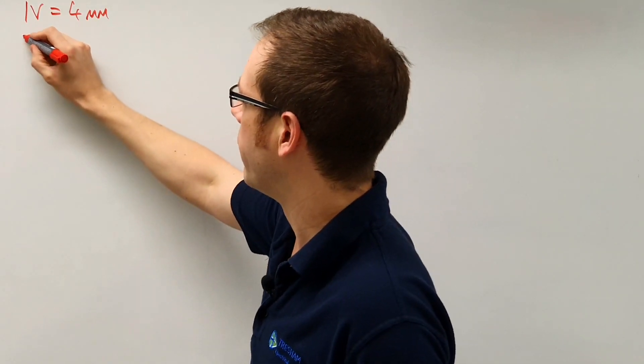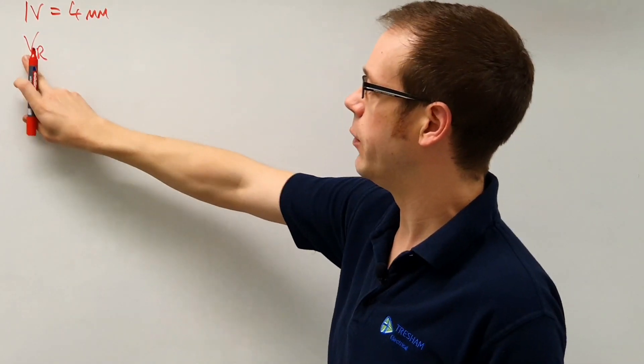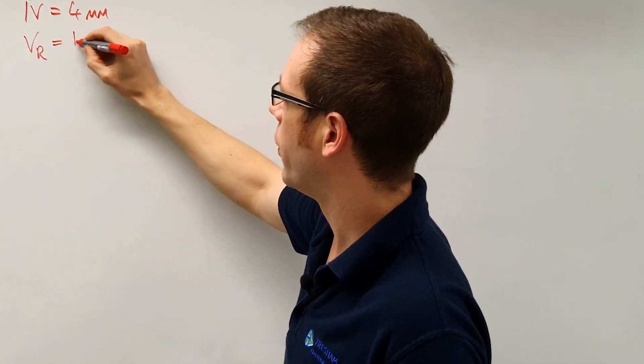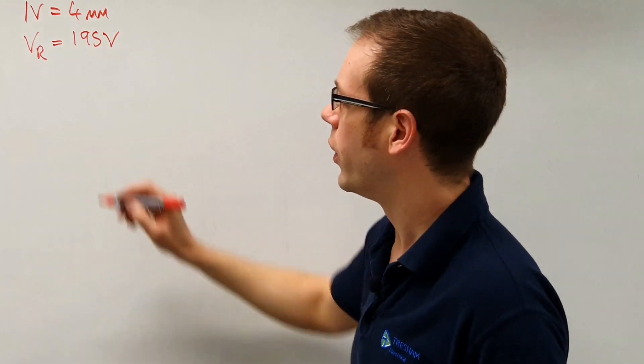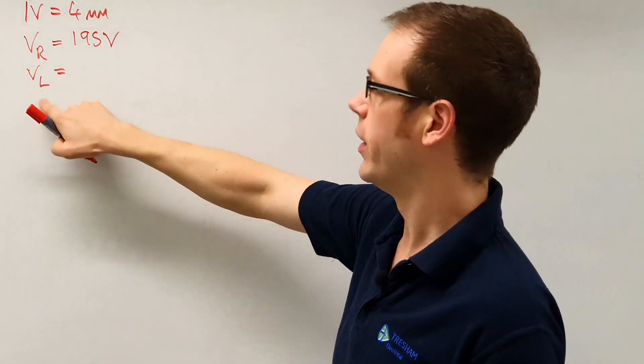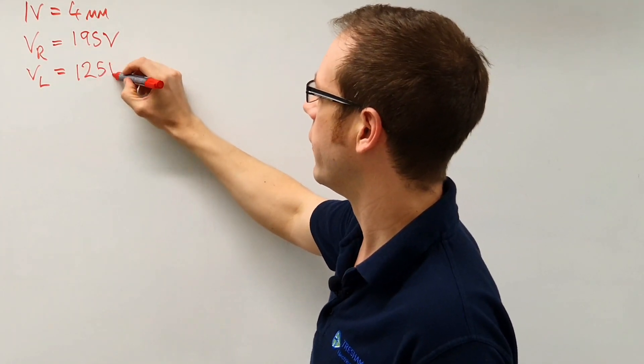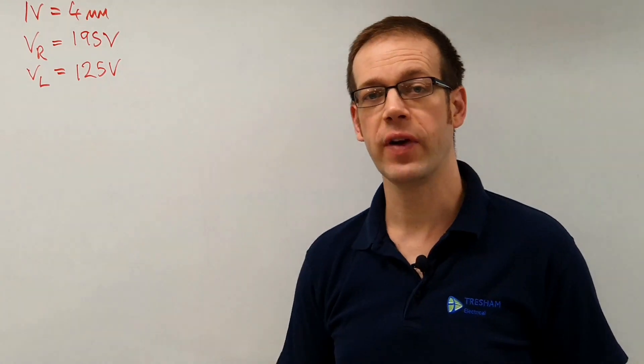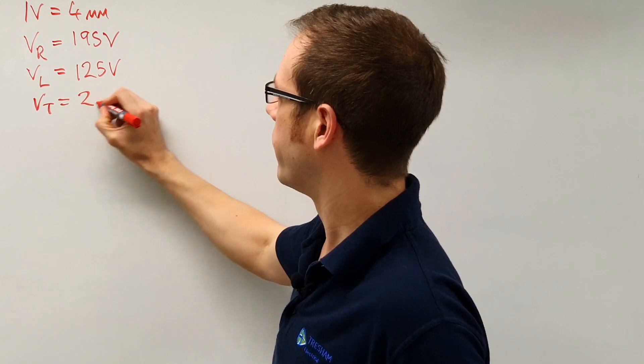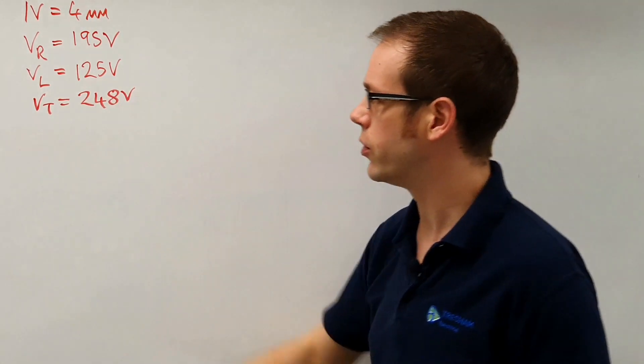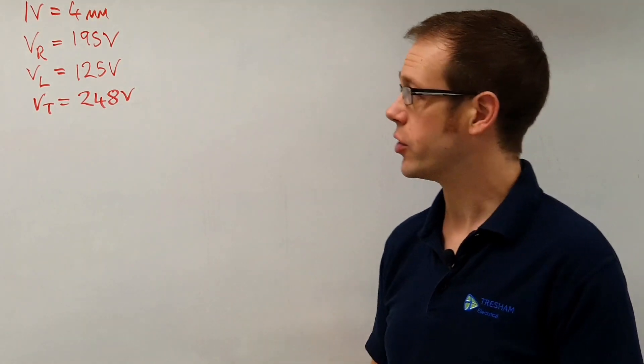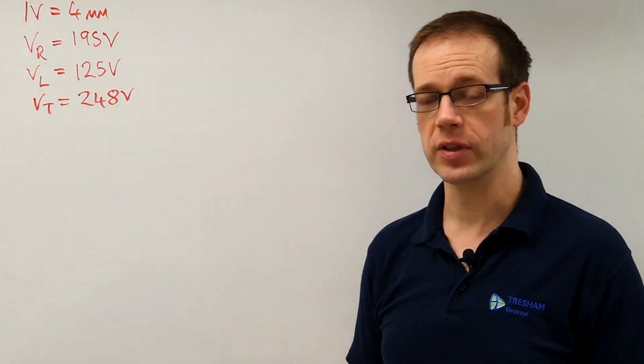So the voltage that we measured across the resistor, VR, is equal to 195 volts. We then found that VL, which is the voltage across the inductor, was equal to 125 volts, and then we found that the total voltage when we measured that was 248 volts. So that was the supply voltage or the total voltage that we were putting into the circuit. So what we're going to do first is draw to scale our resistive voltage at 195 volts.